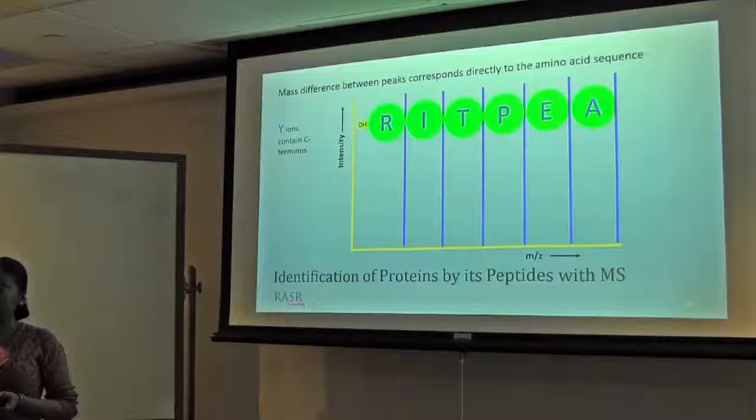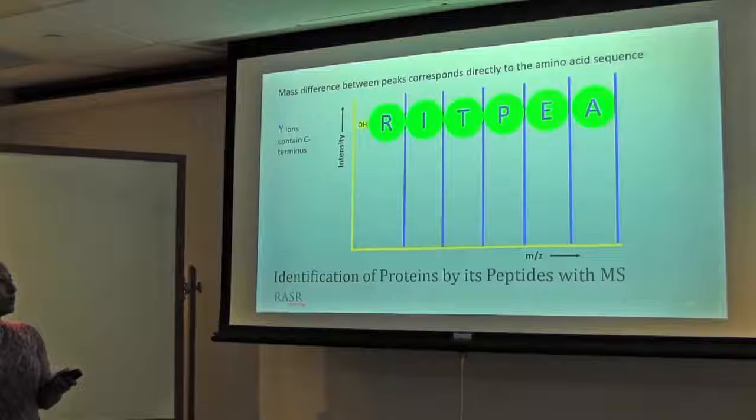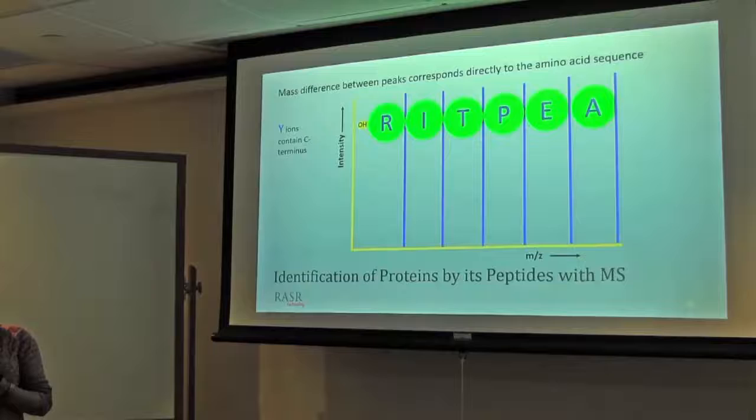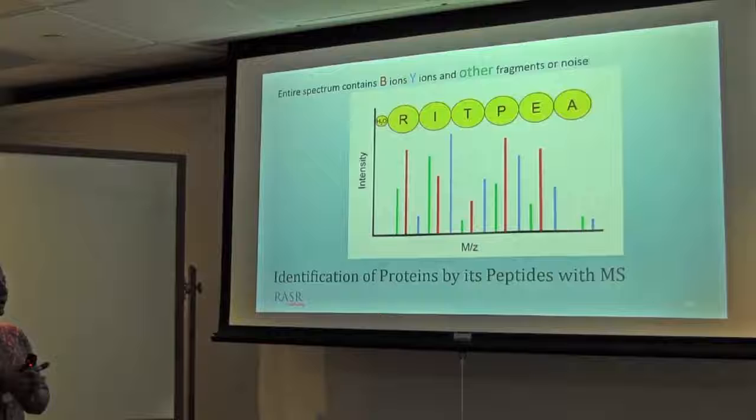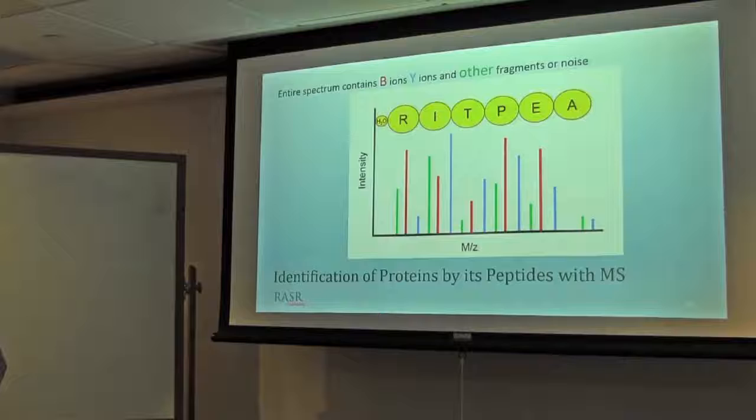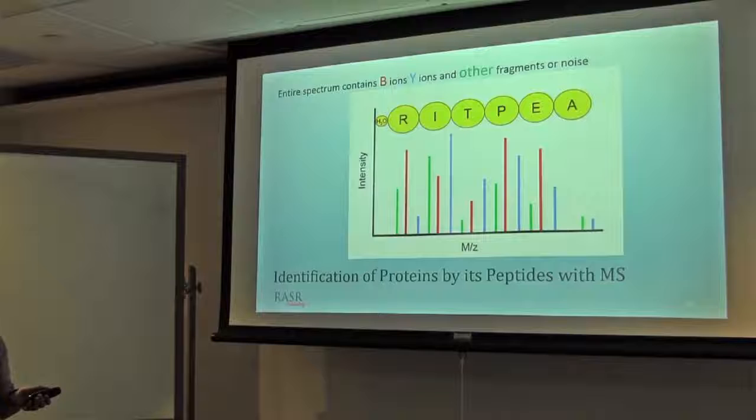Also, with the ions, B and Y ions, you can specifically detect modifications. If certain residues are residing on an amino acid site, you can have the amino acid mass with the increment of that modification. Overall spectra or the fragmentation spectra is looking like with B and Y ions mainly, but we have other fragment ions where carbon-carbon bonds break as well. Or we can also get noise or interfering molecules.